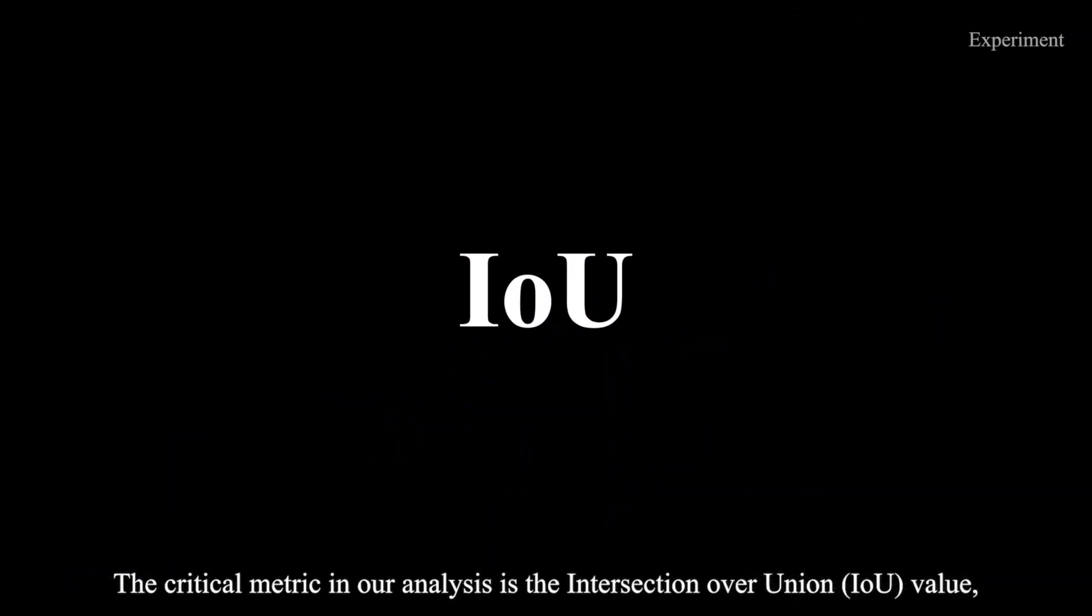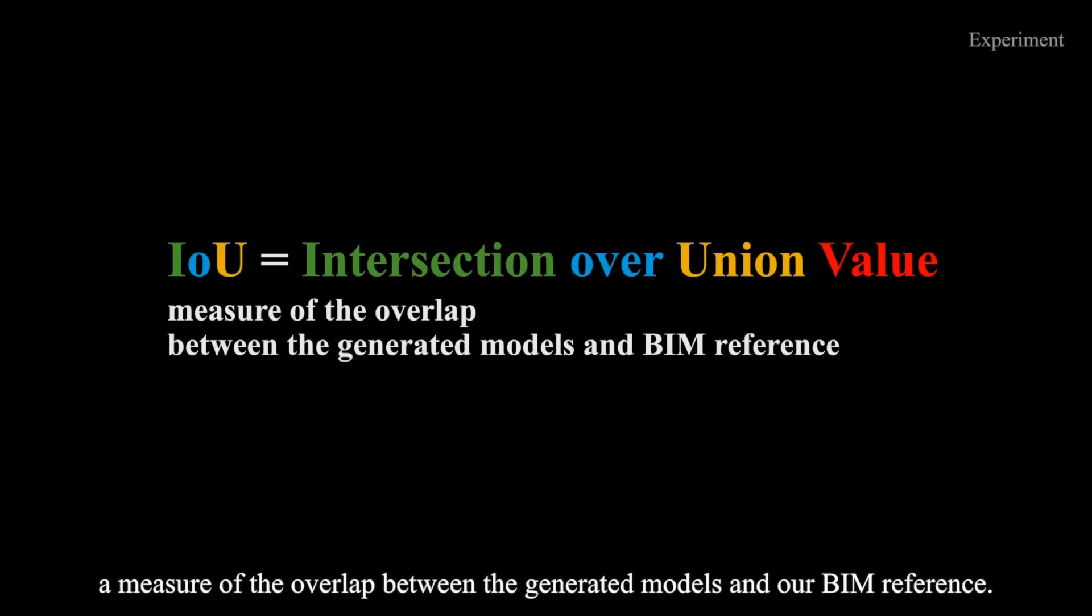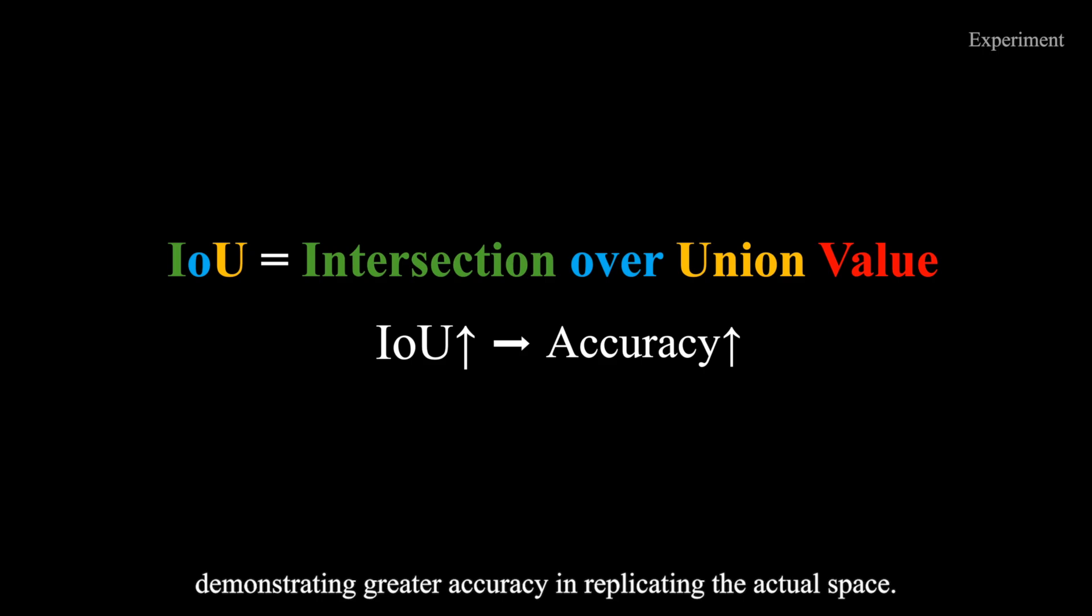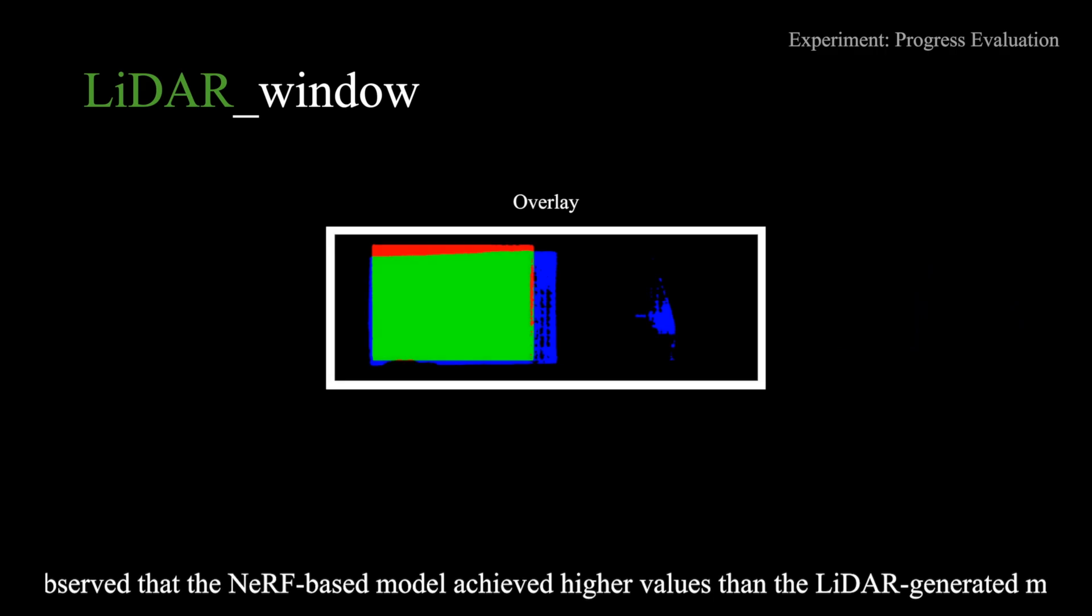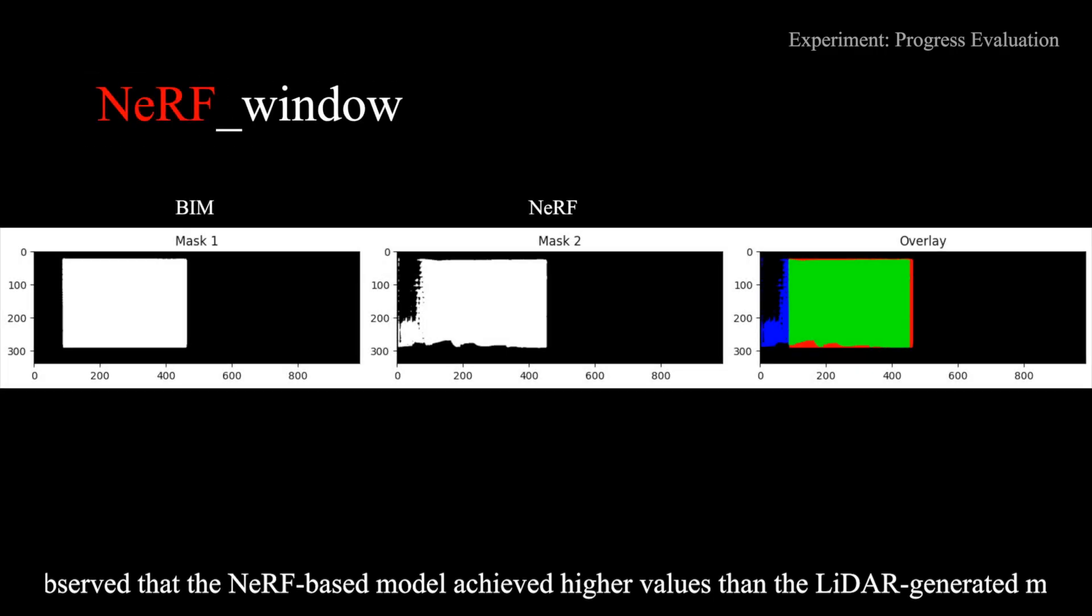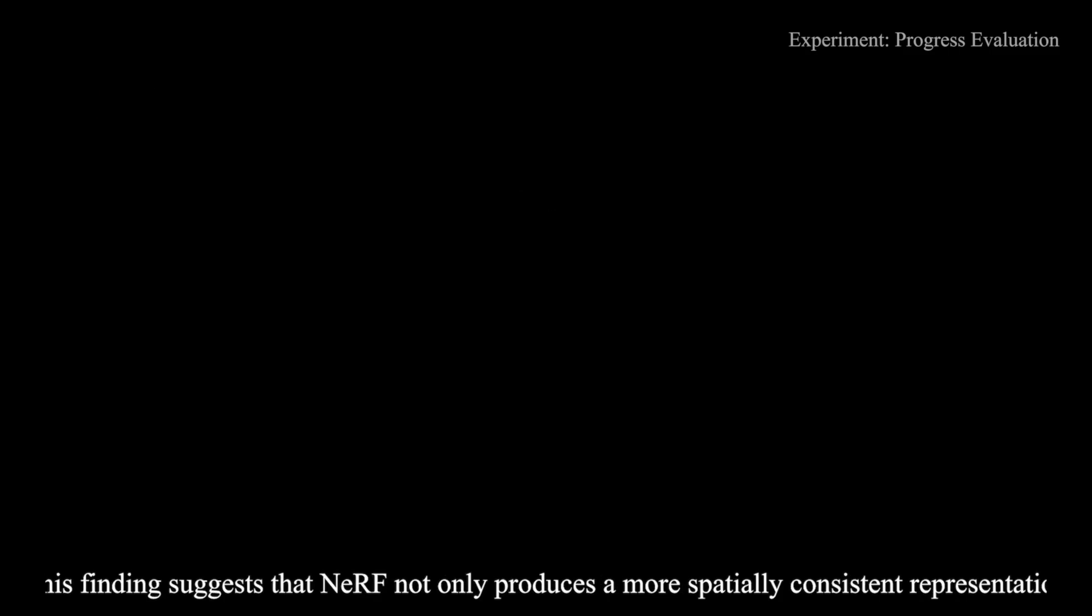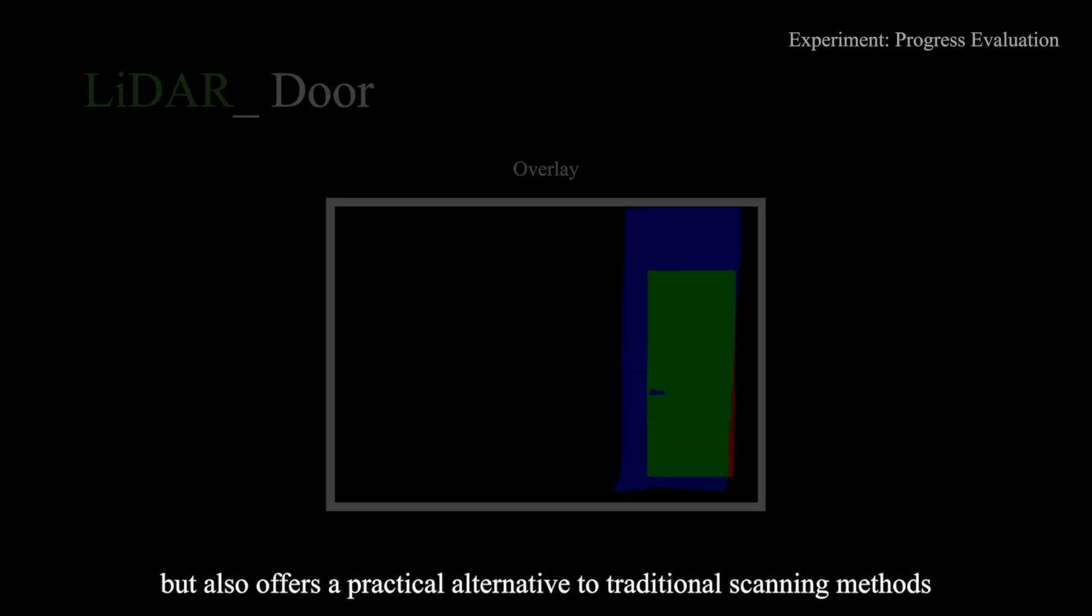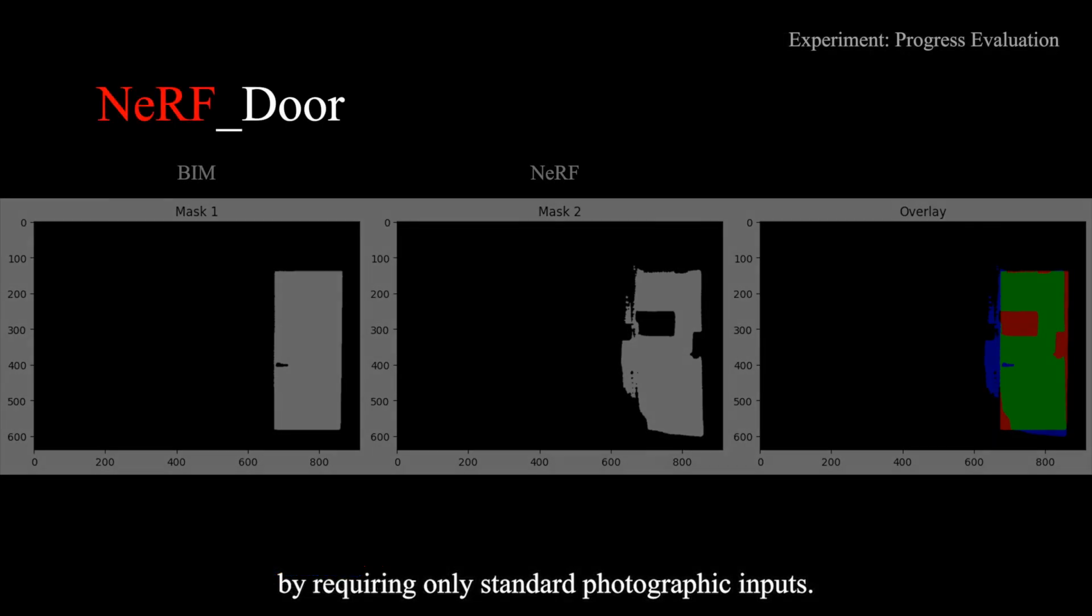The critical metric in our analysis is the intersection over union IOU value, a measure of the overlap between the generated models and our BIM reference. Higher IOU values indicate a closer alignment with the BIM model, demonstrating greater accuracy in replicating the actual space. By calculating the IOU for each method, we observed that the Nerf-based model achieved higher values than the LIDAR-generated model. This finding suggests that Nerf not only produces a more spatially consistent representation, but also offers a practical alternative to traditional scanning methods by requiring only standard photographic inputs.